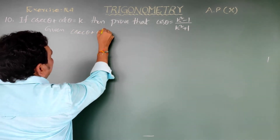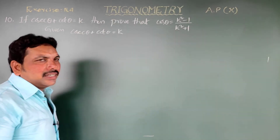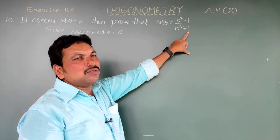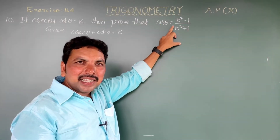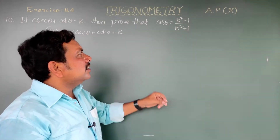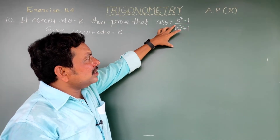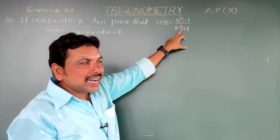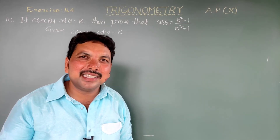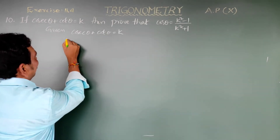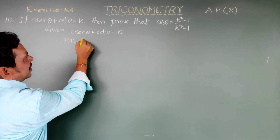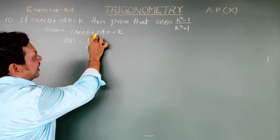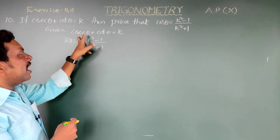Given: cosecant theta plus cot theta equals k. We have to prove cos theta equals (k square minus 1) by (k square plus 1). The LHS is cos theta and the RHS is (k square minus 1) by (k square plus 1). We will take the RHS first, then show it equals the LHS. RHS equals (k square minus 1) by (k square plus 1). In place of k, substitute (cosecant theta plus cot theta) as given.